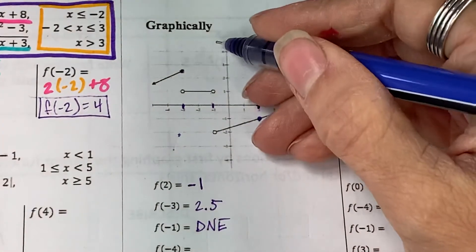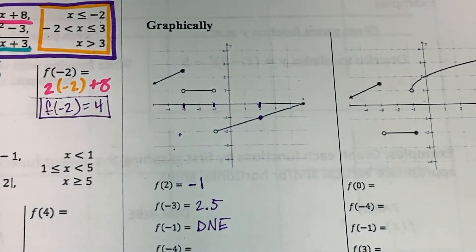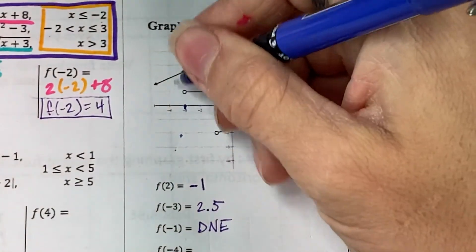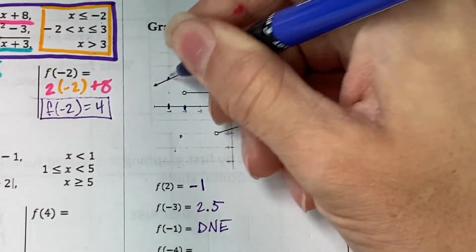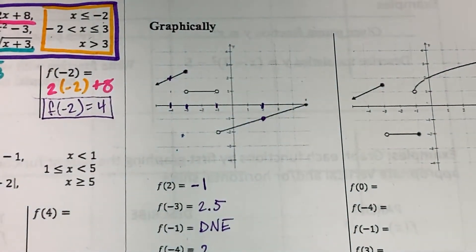Does it pass the vertical line test? Yeah, absolutely, because it is not hitting multiple points along that vertical line. Lastly, f of negative 4. We plug negative 4 as an input, and our output is on this piece at 2.